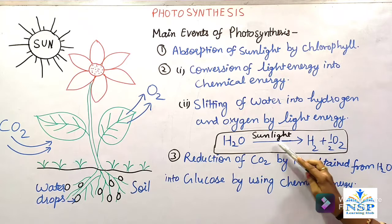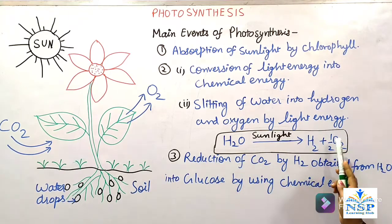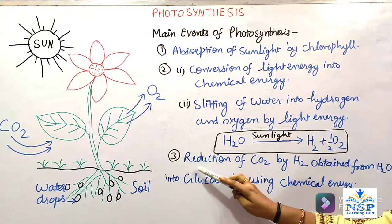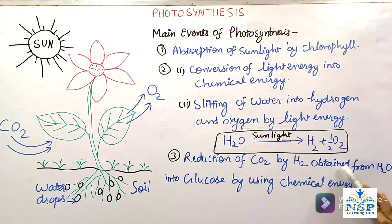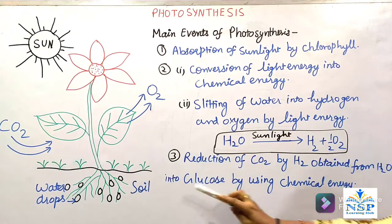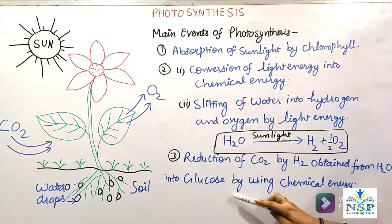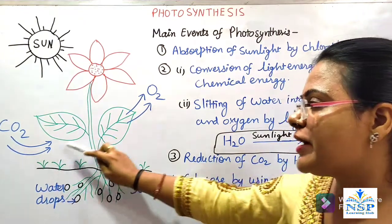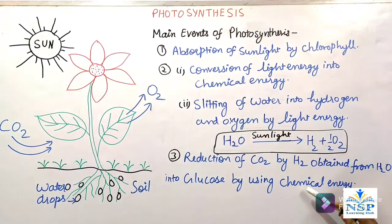It means sunlight जो होता है, वो water को hydrogen और oxygen में divide कर देता है। और यह hydrogen use होती है — reduction of carbon dioxide by hydrogen obtained from water into glucose। Glucose बनाने के लिए hydrogen यूज़ की जाती है जो carbon dioxide को reduce करके glucose बना देती है, by using chemical energy।